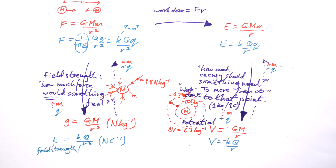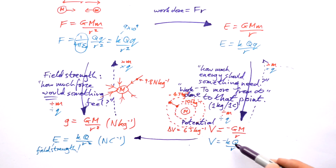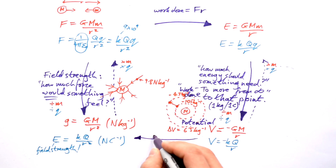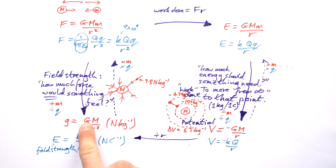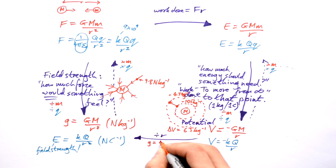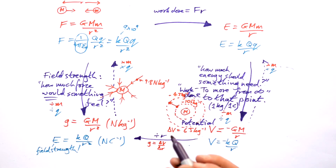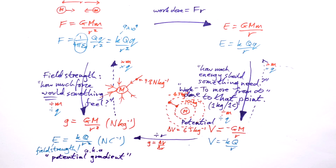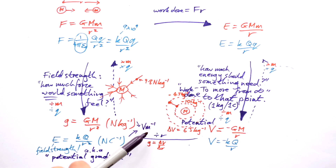There is one more link. To get from K Q over r to K Q over r squared, all we do is divide by r. So field strength in both cases is merely the potential divided by the distance. That's why you can say that g equals delta V over delta r — the same thing applies for electric field. That's why field strength is also known as potential gradient: how does the potential change with distance? So electric field strength can be expressed as newtons per coulomb or volts per metre.